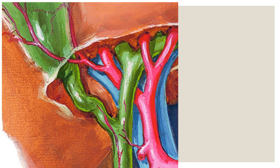So what are the contents of Calot's Triangle? Calot's Triangle consists of the cystic artery.